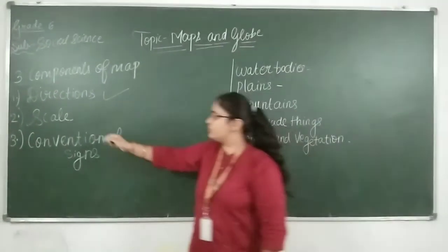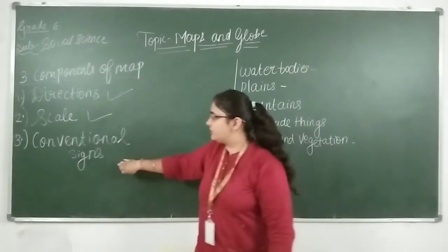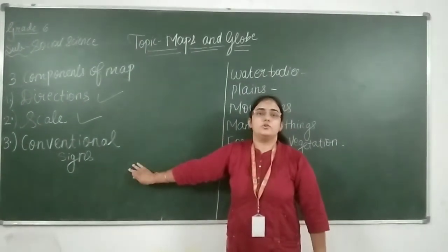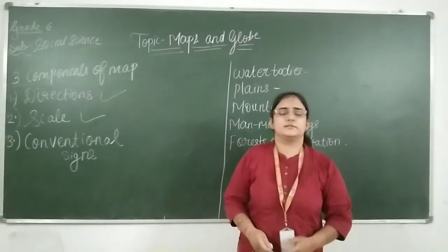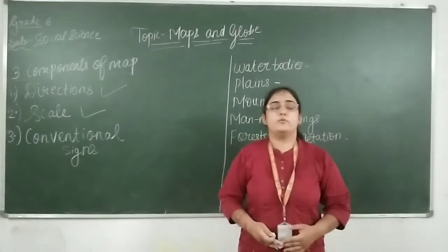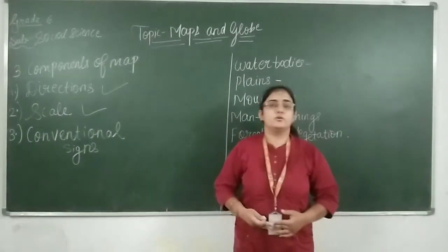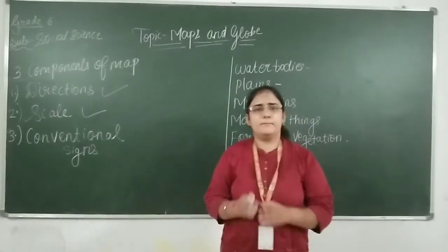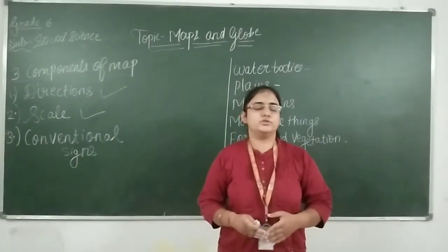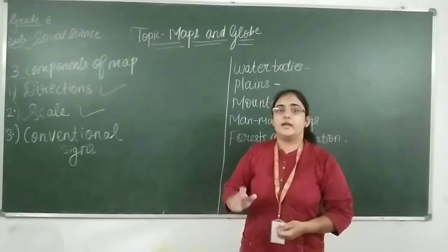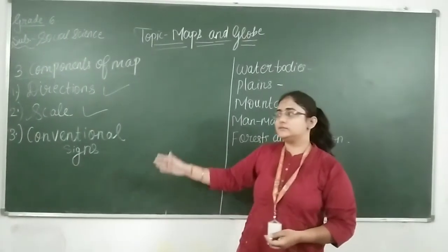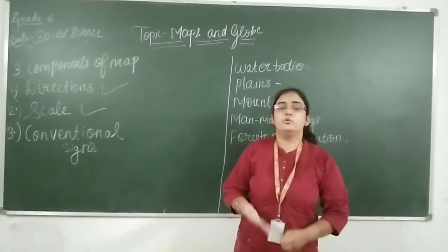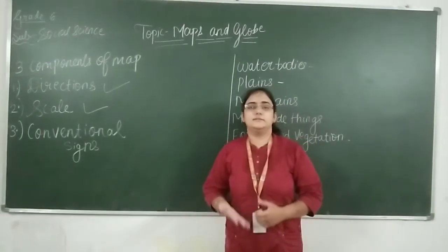We learnt about the scale. Now we will study about conventional signs. What are conventional signs? Signs, symbols, shapes, graphics, and colors — all of these are written in the map and are useful. If you simply study the map without them, you will not understand properly. But if colors and symbols are used in a map, it is easier to read the map.